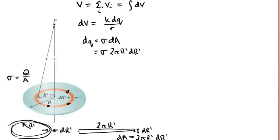So our potential, which will be the integral of dV, will now be the integral, well dV is k dQ over r, and dQ is sigma dA, and dA is 2π r prime dr prime. So combining all that together, we actually get this will be k times sigma 2π r prime dr prime over r.